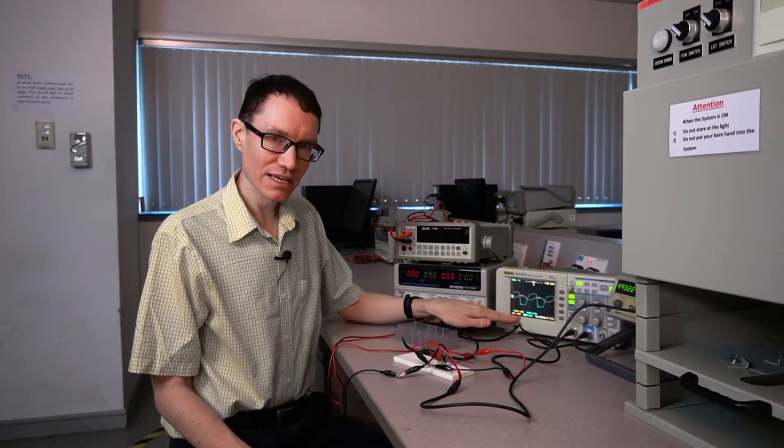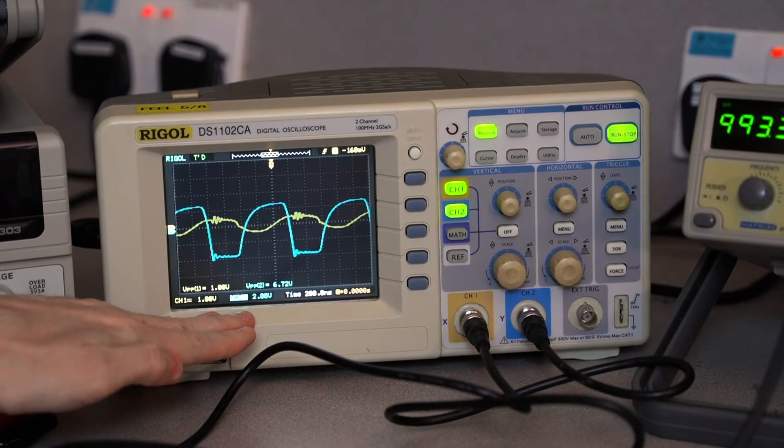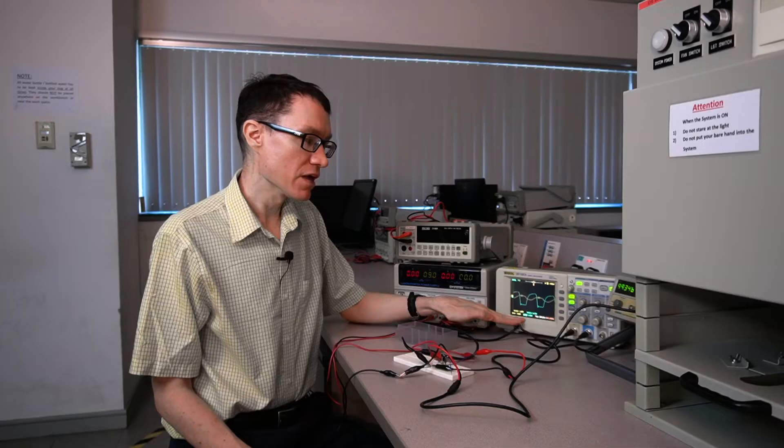As we can see, the gain has increased substantially. We now have more than 6 volts peak-to-peak at the output. Unfortunately, the transistor circuit is now saturated, so we don't have a beautiful sine wave anymore.